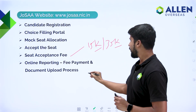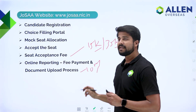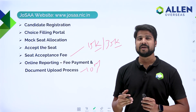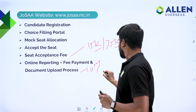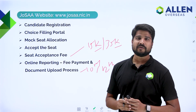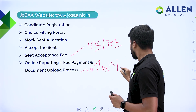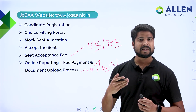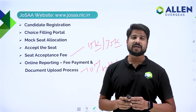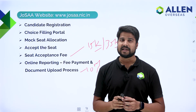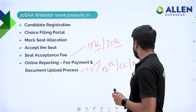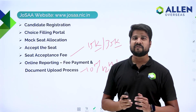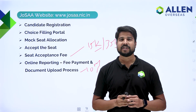For documents, you will be required to upload your 10th class certificate as birth proof. If you do not have that certificate, you can provide your birth certificate as well. Your 12th class certificate is required for state of eligibility proof. Your category certificate is needed if you are from a particular category. JOSAA has issued a prescribed format for the category certificate. The final document is a medical certificate, which is applicable for all, and the prescribed format has also been issued by JOSAA.